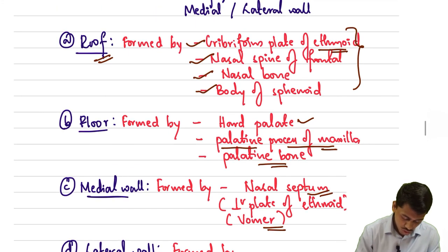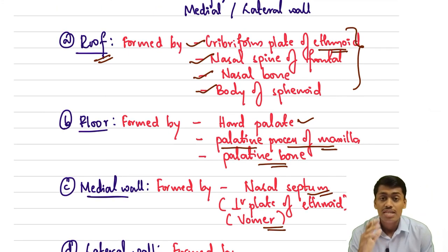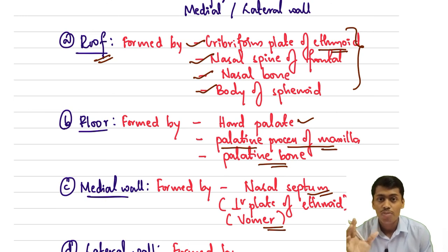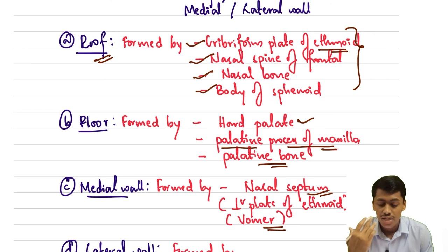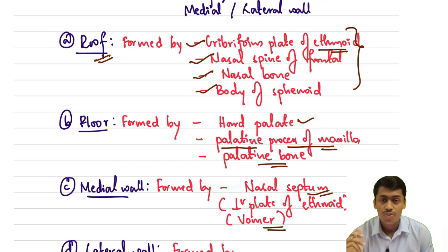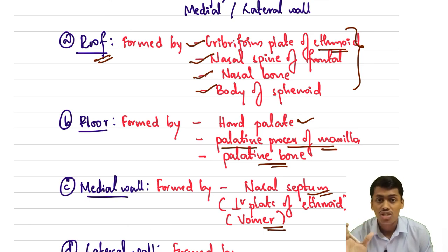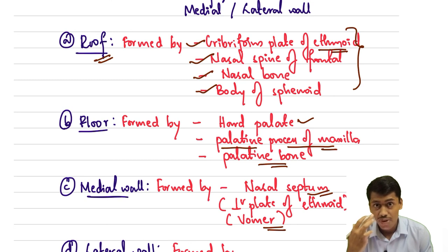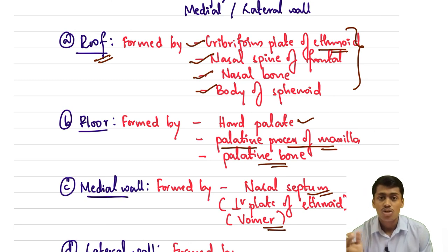We have covered the roof, floor, and medial wall. The lateral wall will be covered in a separate video, including topics such as the conchae, meatus, and their importance. This forms the basic introduction of the external parts of the nose, the vestibule, and the nasal cavity proper with its boundaries.